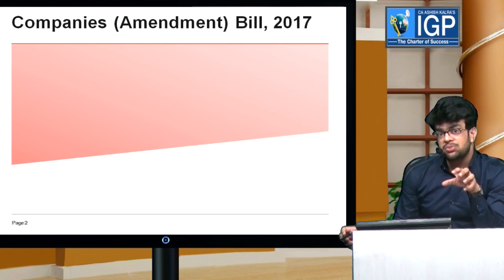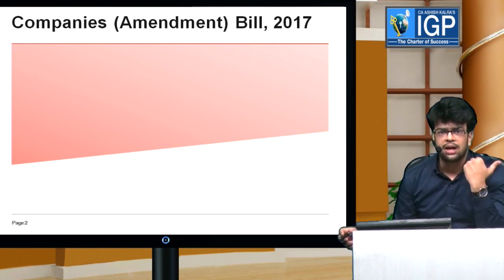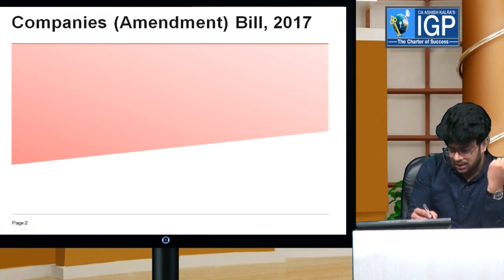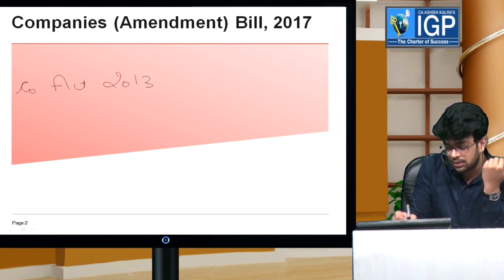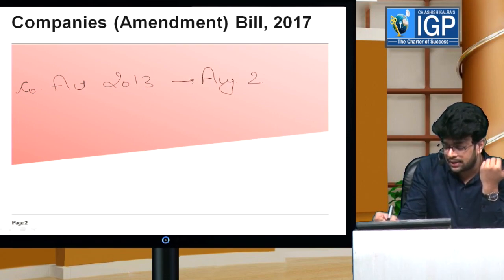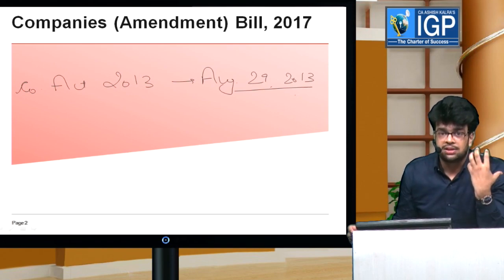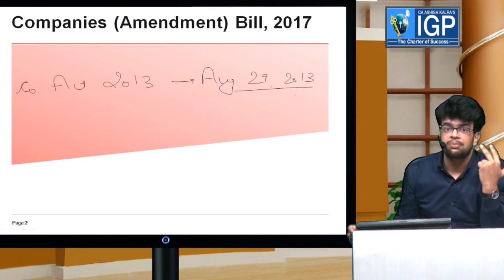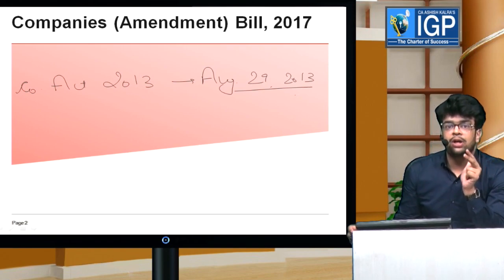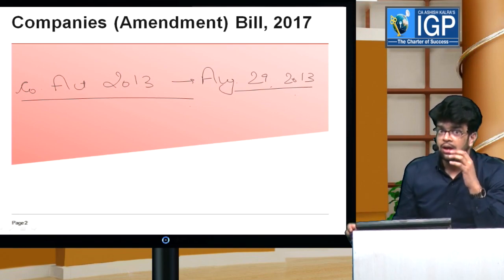Before we go to the Companies Amendment Bill 2017, let's see what is an amendment act and what role it plays. As we all know, the Companies Act 2013 received the President's assent. When there is an act, first a bill is made, that bill is passed by the people, then passed by parliament, and then the President gives it his assent. Then it becomes an act. Like the Companies Act on August 29, the President's assent was given, and then it became an act.